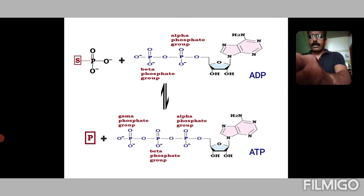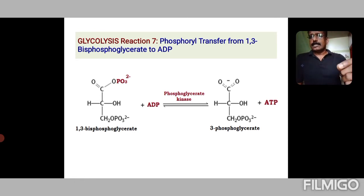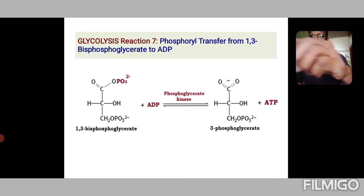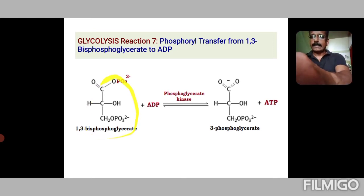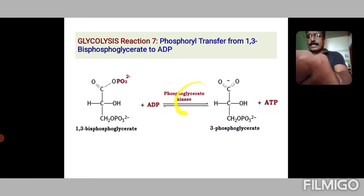Let us see some examples. From glycolysis, reaction 7 is a phosphoryl transfer from 1,3-bisphosphoglycerate to ADP. The 1,3-bisphosphoglycerate transfers this phosphoryl group to ADP so as to form ATP, and the product 3-phosphoglycerate is shown here. Here also the kinase enzyme comes into play — phosphoglycerate kinase.